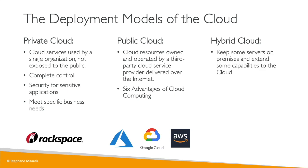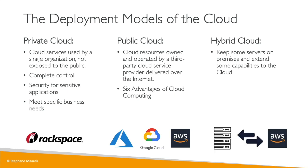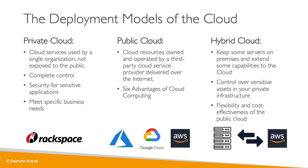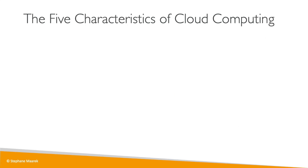Lastly, also important for the exam, is the concept of a hybrid cloud. With hybrid, we do a mix of private and public — we keep some servers on-premises and extend some capabilities into the cloud. That means we have a hybrid of our own infrastructure and the AWS cloud. We maintain control over sensitive assets in our private infrastructure, but we have the flexibility and cost-effectiveness of the public cloud.